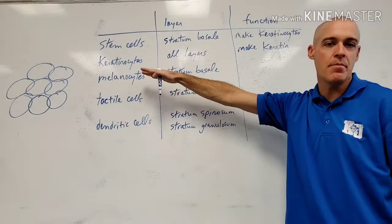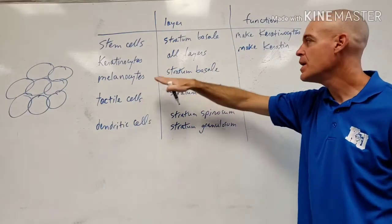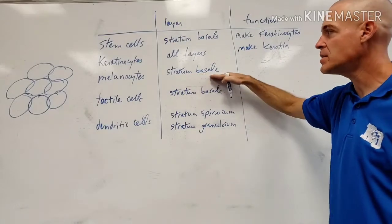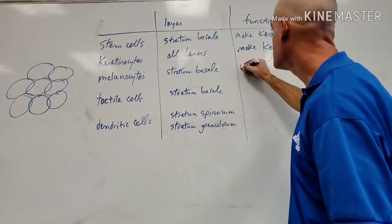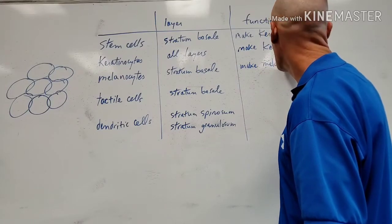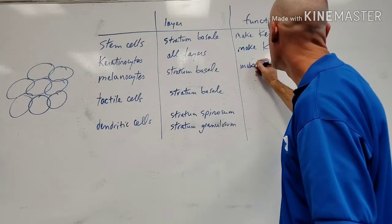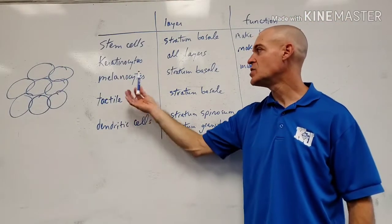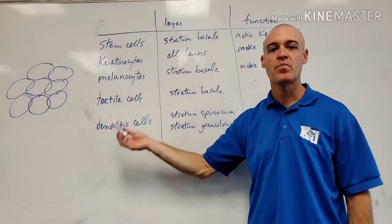What about the melanocyte? It's also in that really active deep layer, the stratum basale. The melanocytes make melanin, and melanin is your skin pigment. Something really interesting is that everybody has the same number of melanocytes in their epidermis.